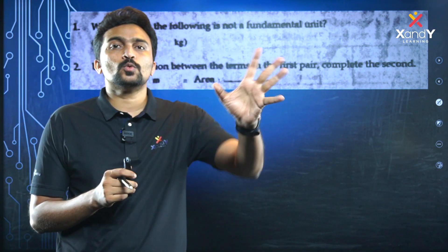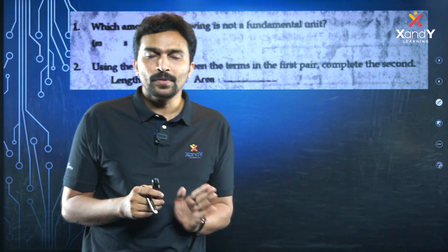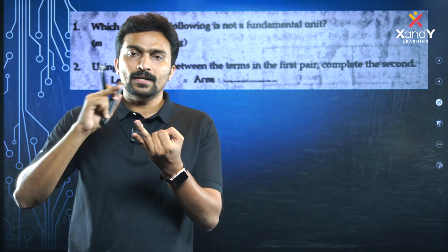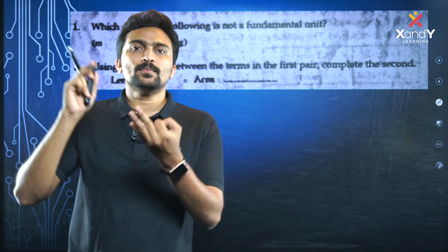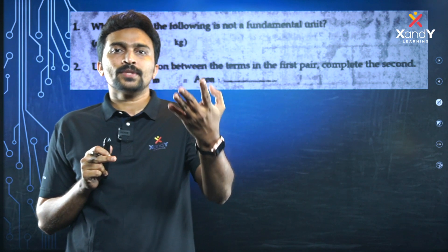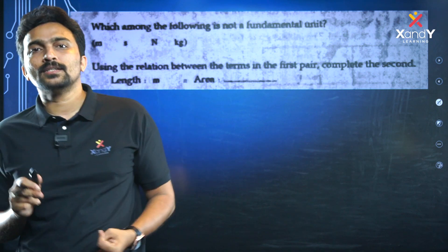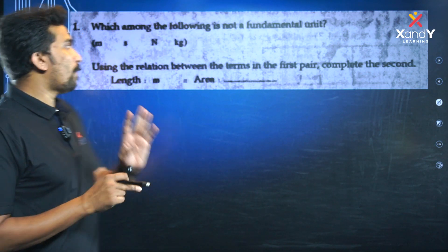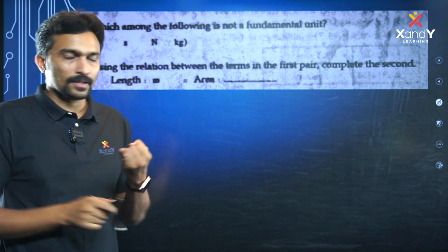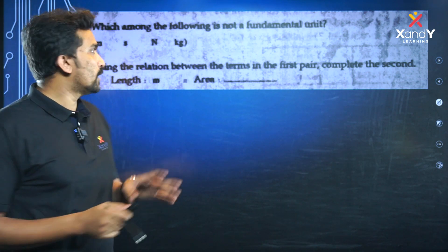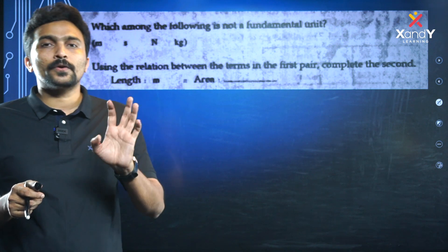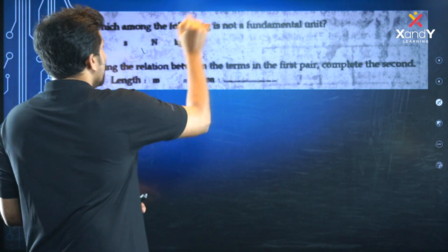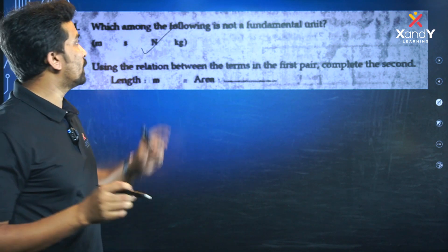Fundamental units include mass, length, time, temperature, current, amount of substance, and luminous intensity. Their SI units are meter, second, kilogram, and so on. Newton is the unit of force — it is a derived unit, not a fundamental unit. So the answer is Newton.